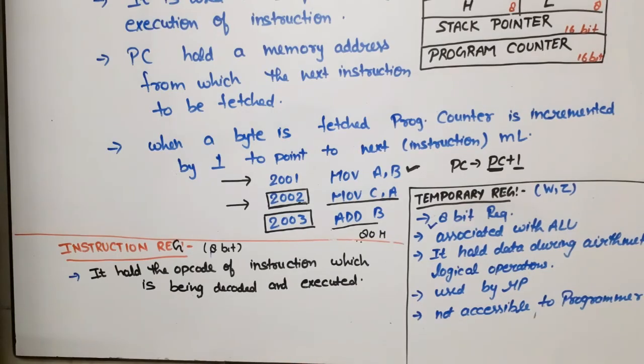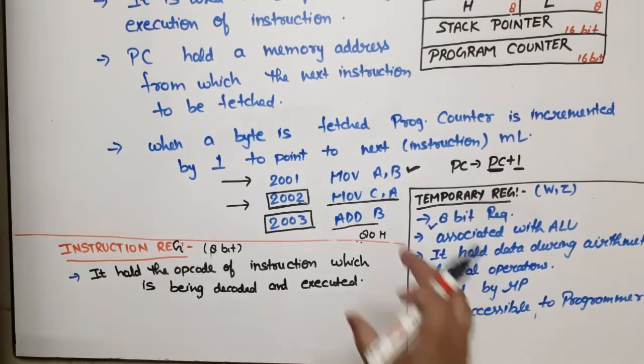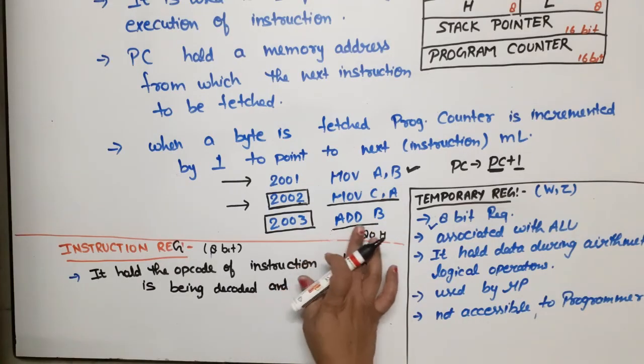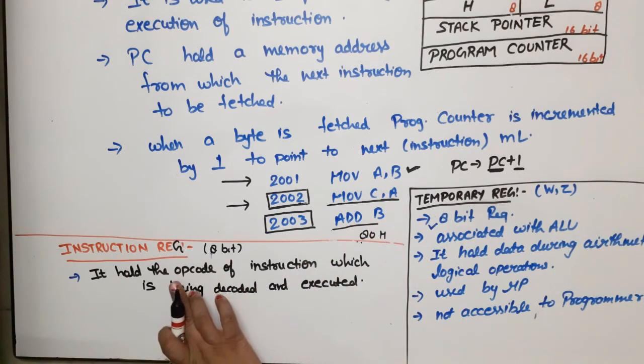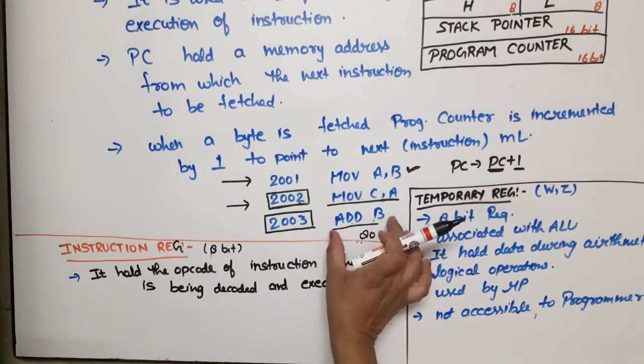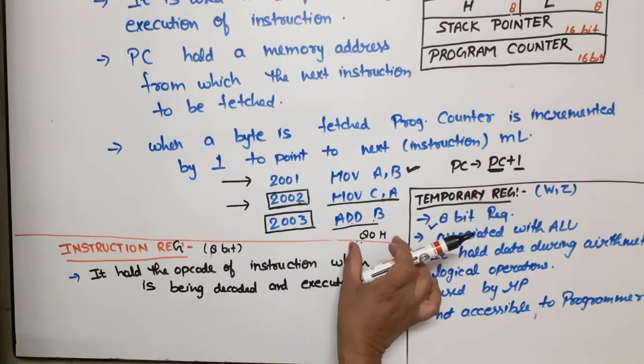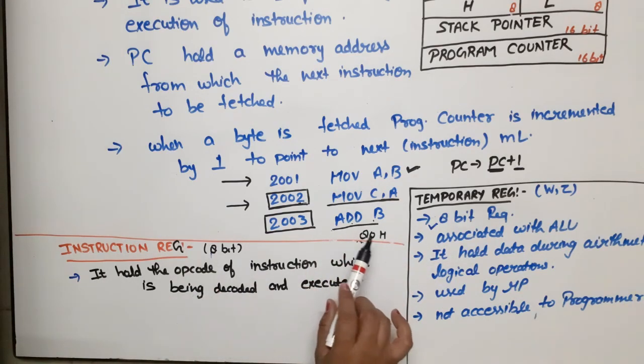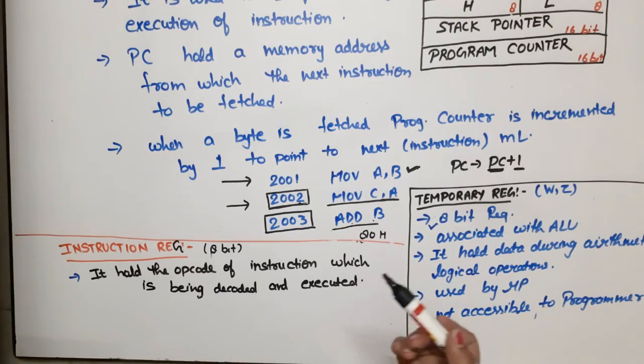Last register is the instruction register. What is the function of the instruction register? Instruction register basically holds the opcode of the instruction which is being decoded and executed. For example, if we talk about this program, these are opcodes. We have written these opcodes in alphabets, but this is not stored in alphabets; it is stored in bits. For example, ADD B: this is the opcode in assembly; this is the opcode in machine code. The instruction register will store 80, then it will decode what is the meaning of this 80.